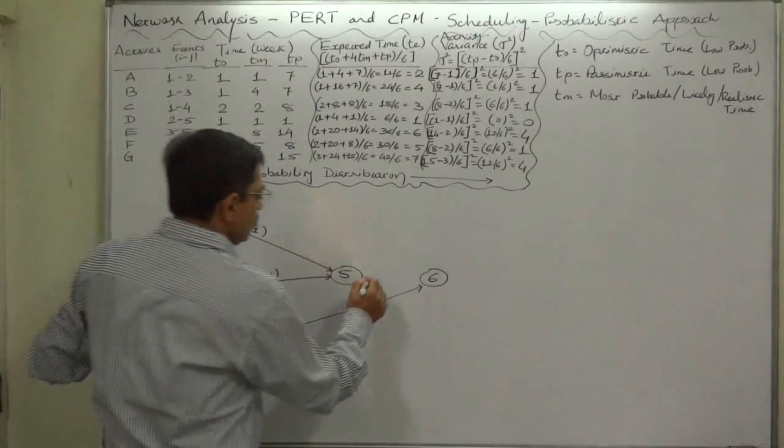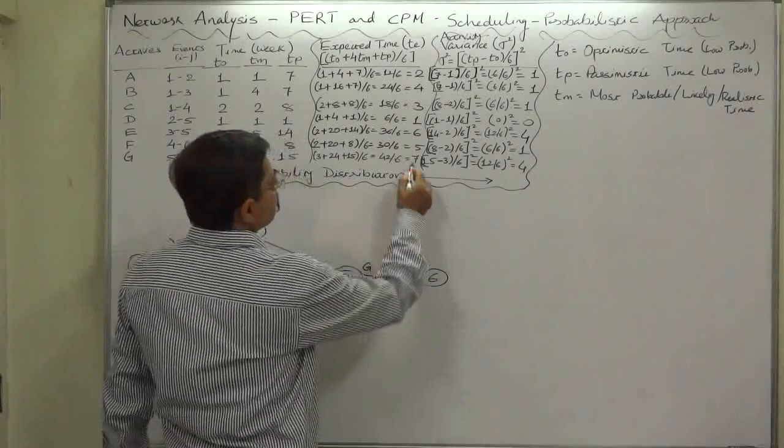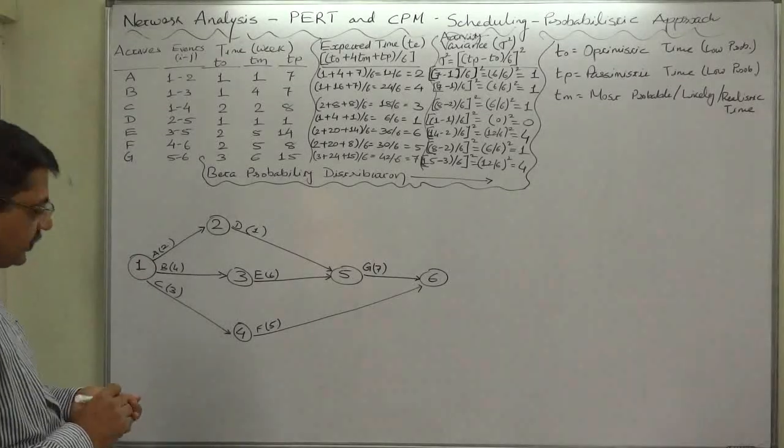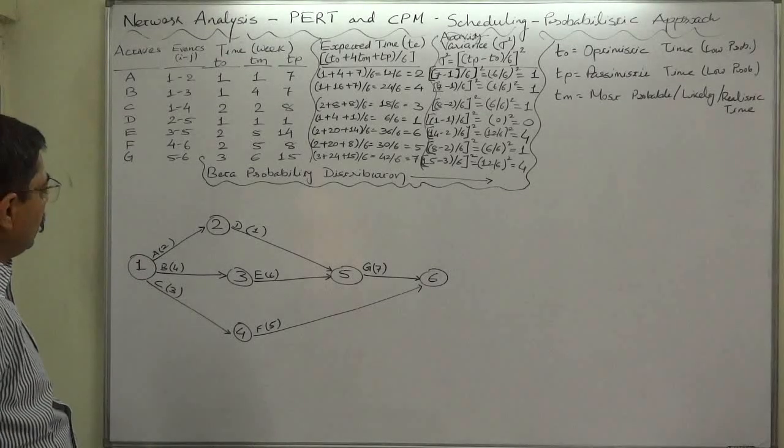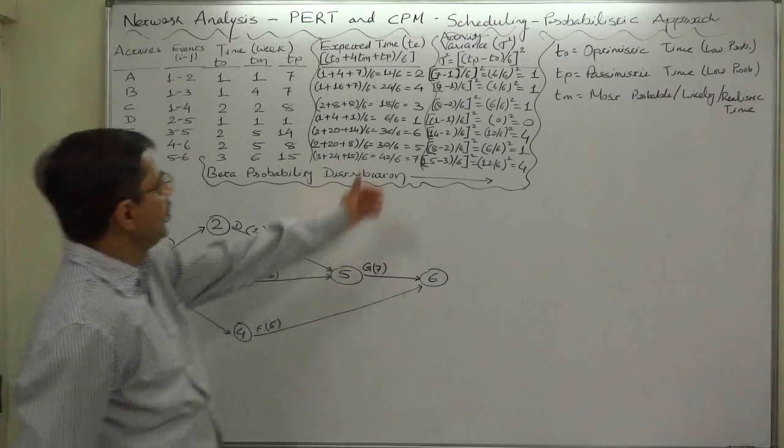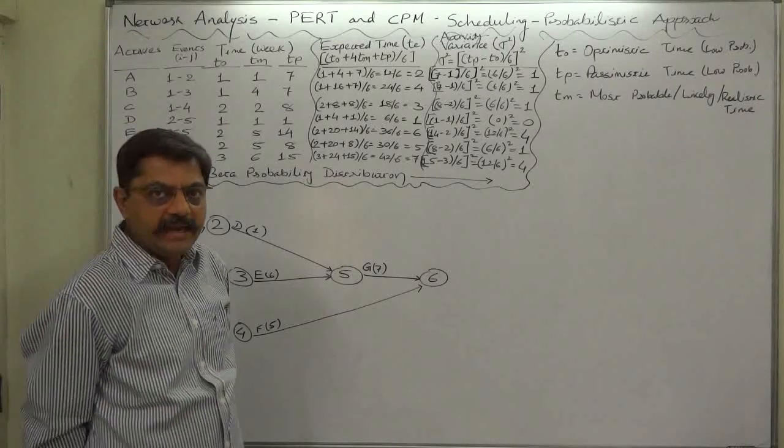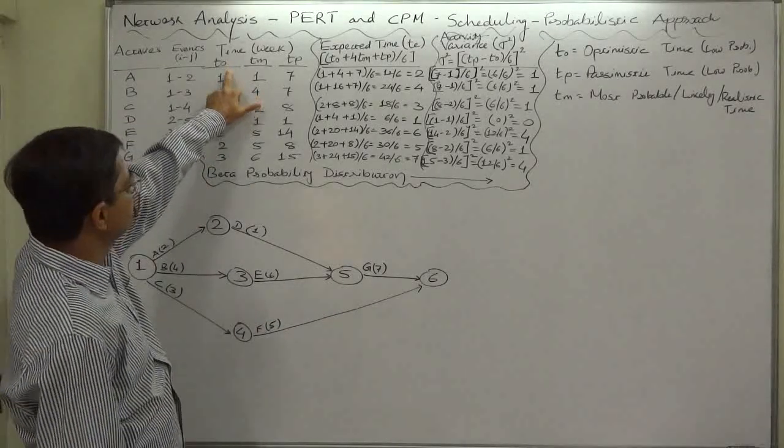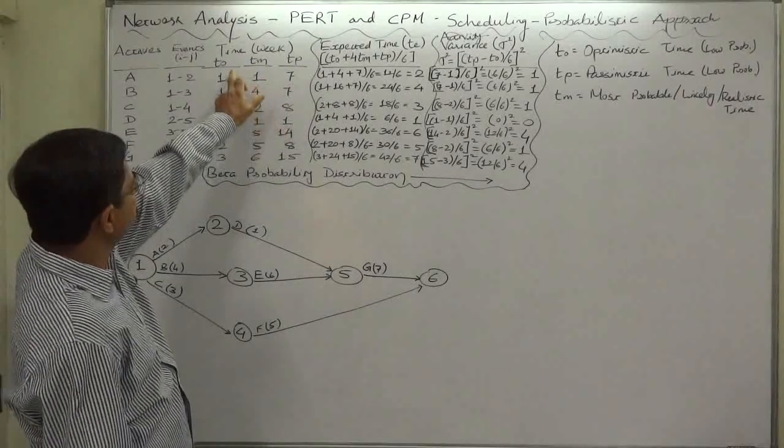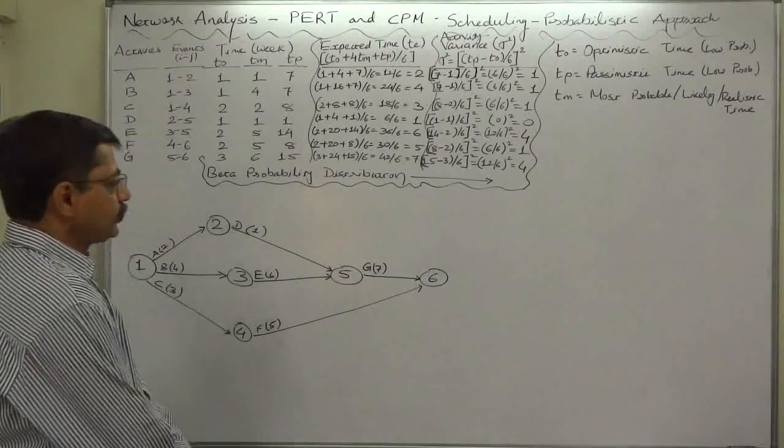So this is a very simple PERT chart for this project based on the expected time calculated by us as the weighted average of these three times: optimistic time, most likely time, and pessimistic time, taking weights respectively 1, 4, and 1.